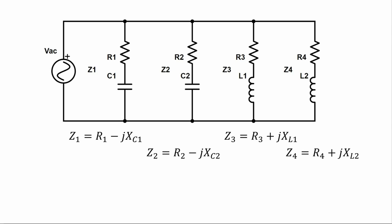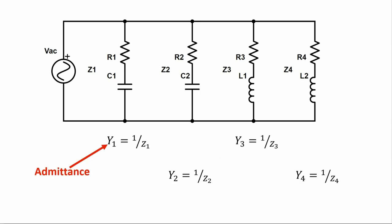Impedance is denoted by the letter Z, is measured in ohms, and has a magnitude and a direction. Alternatively, we could use the reciprocal of impedance, which is admittance, and uses the symbol Y, is measured in Siemens, and also has both a magnitude and direction.